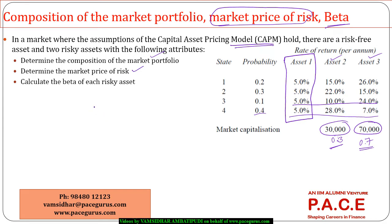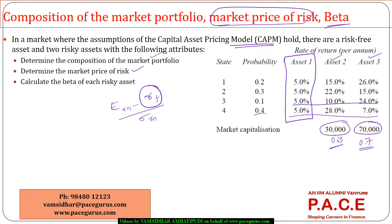Now I have to find the market price of risk. To compute the market price of risk, I find the expected return of the market minus the risk-free rate of return, and divide it by the standard deviation of the market. So I need to make those computations. The risk-free rate RF is already known as 5%.